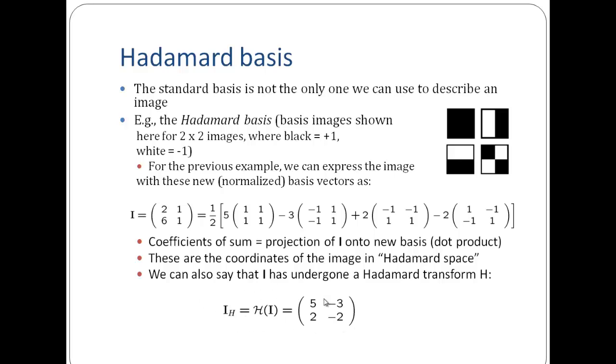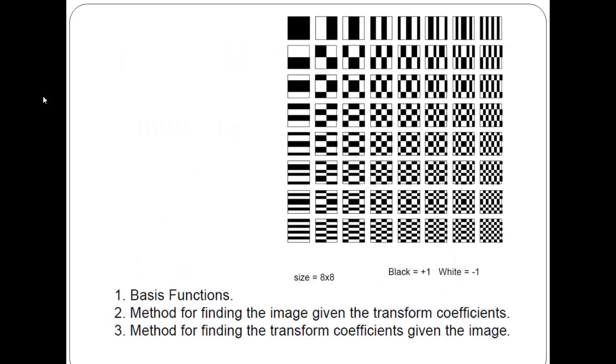Similarly, I can extend this to an 8 cross 8 value, wherein I have matrices of 8 cross 8. And I will have these basis vectors as 8 cross 8 values. This would be all 1s across the 8 cross 8. And similarly, like we saw, we can have these vectors.